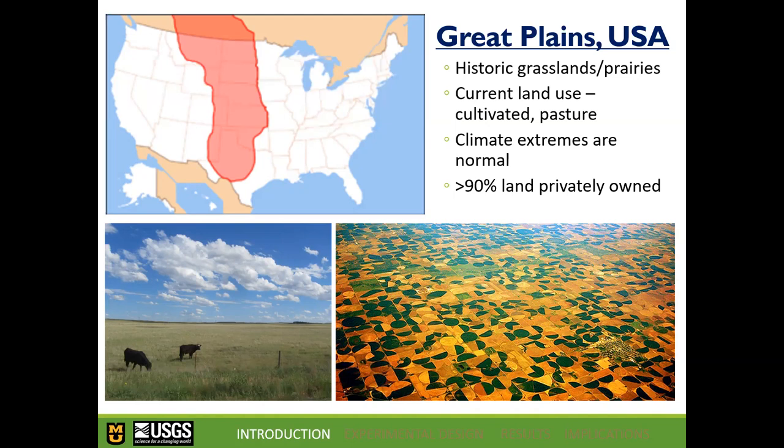In areas where the aquifer is lower or soil isn't as fertile, there's a lot of pasture and cattle ranching. Historically, climate extremes have been fairly normal in this region. Farmers are used to extended droughts, flash thunderstorms, and a lot of variability between and within years.